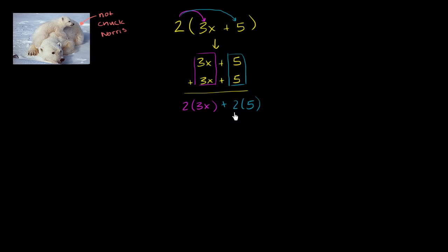But with that out of the way, let's continue to simplify it. So when you multiply the 2 times the 3x, you get 6x. You multiply the 2 times the 5, you get 10. So this simplified to 6x plus 10.